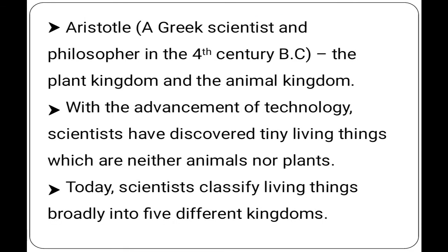From the fourth century, the Greek scientist and philosopher Aristotle first divided living things into two main groups: the plant kingdom and the animal kingdom. The differences between a plant and an animal seem obvious.